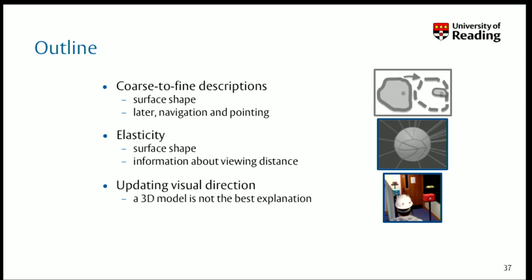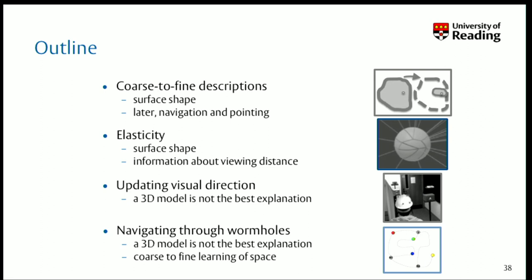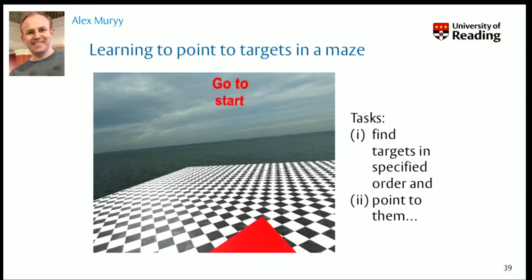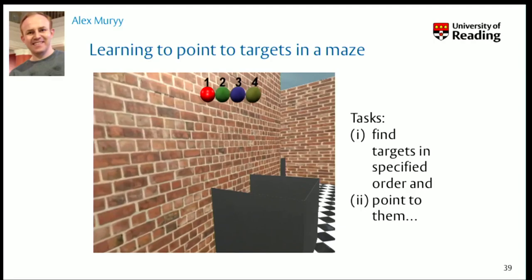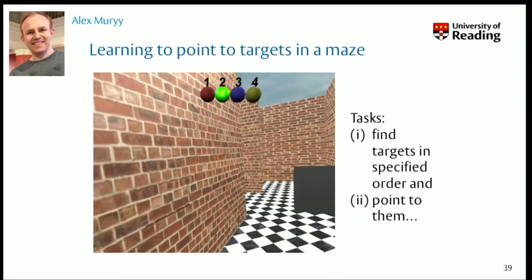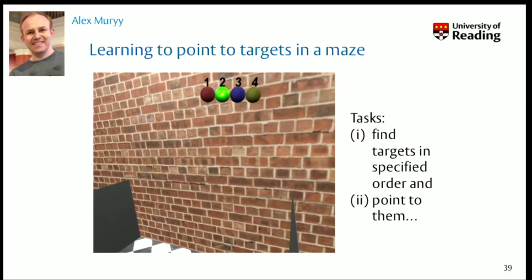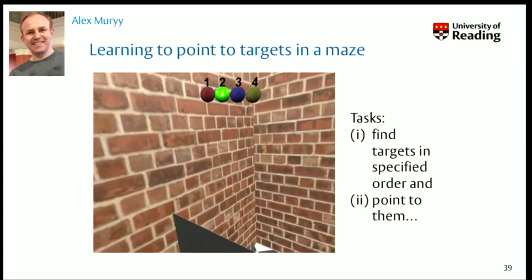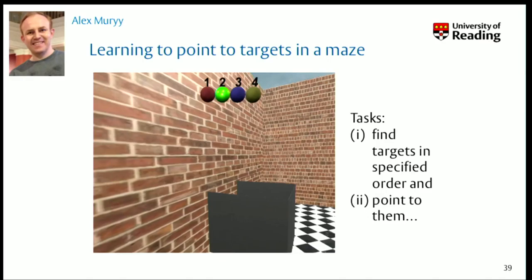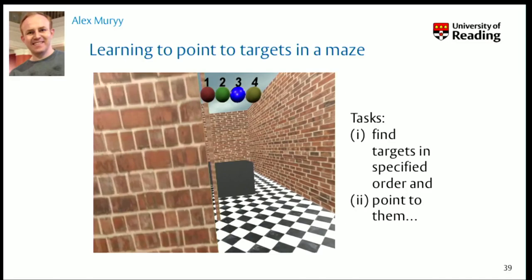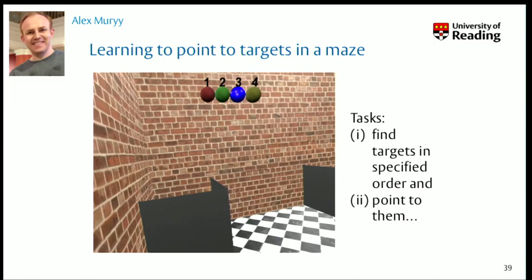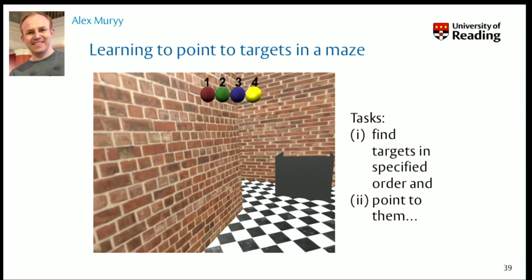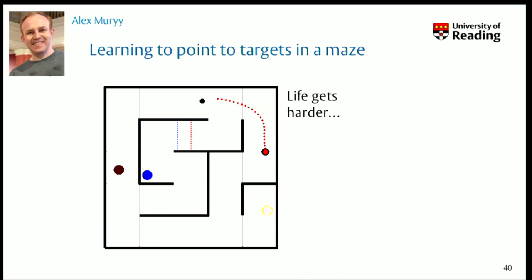Final experiment: navigating through wormholes, which you saw briefly before. Again, the conclusion is that the 3D model is not the best explanation of what they're doing. Here's a video of someone doing the task. The task is to find targets in a specified order and point to them. There are little gray boxes — they have to go right up to them to examine, they can't just look down a corridor and see one at the end. They put their head in and see whether there's something inside, then remember where the targets are. The next target to find is shown on their wrist, so they can look down and see what they need to find next.